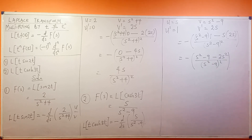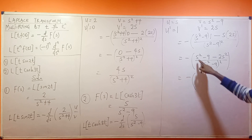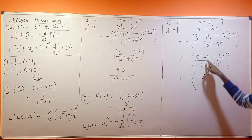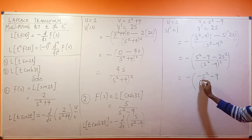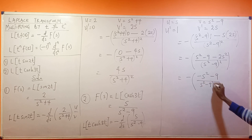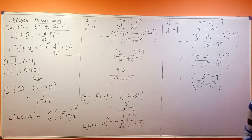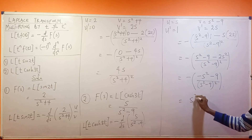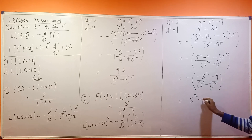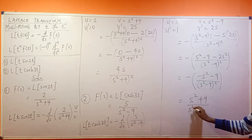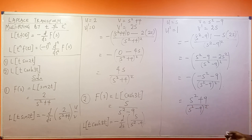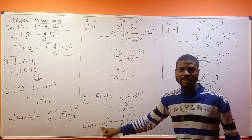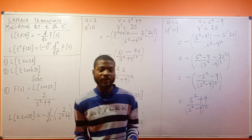Combining: s squared minus 2s squared gives minus s squared, and minus 9 remains, so we have minus(minus s squared minus 9) divided by (s squared minus 9) squared. Opening the bracket with the negative sign: minus times minus s squared gives plus s squared, and minus times minus 9 gives plus 9. So the final result is (s squared plus 9) divided by (s squared minus 9) squared — that is the Laplace transform of t·cosh 3t.